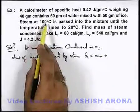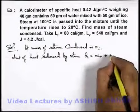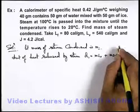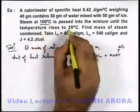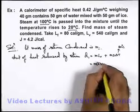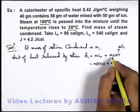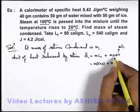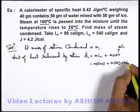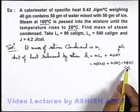Plus, from 100 degree centigrade it will drop to 20 degree centigrade, so it will also release an amount of heat m·s·ΔT, where ΔT equals 80 degree centigrade. So Q1 can be calculated as m multiplied by 540, plus m multiplied by specific heat of water, which is 1 calorie per gram, multiplied by 80. That gives m multiplied by 620 calories. This is the total heat released by steam.